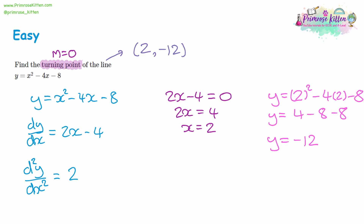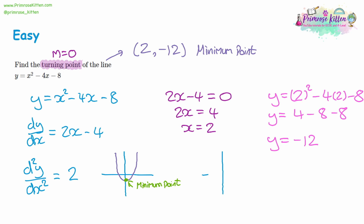The extra information we can get is whether it's a minimum or maximum point. A minimum point is the lowest the y-values can be on that curve — the second derivative d²y/dx² is greater than zero there. A maximum point is where y-coordinates cannot get higher — there the second derivative is less than zero. If the second derivative were zero, you'd have a straight line rather than a curve.